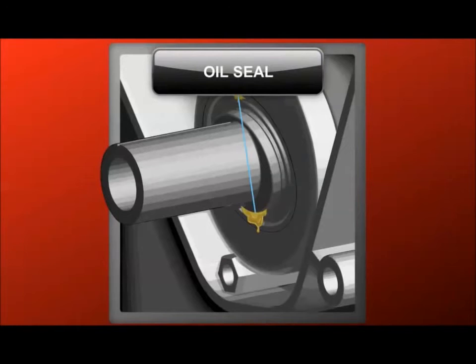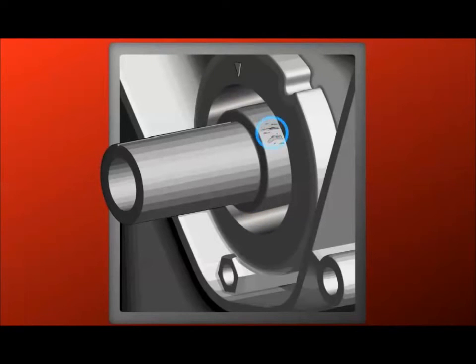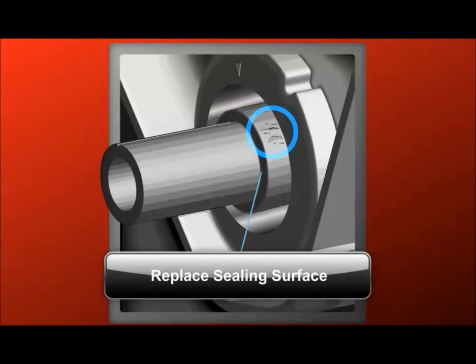If the leak occurs at a seal, make sure the seal is seated squarely in its bore, and inspect the rotating component for nicks or grooves. If the seal contact face has any damage, replace the rotating component.